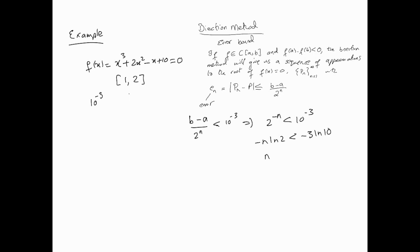And of course n then becomes greater than 3 ln 10 divided by ln 2, which is equal to approximately 9.96. This means that n = 10 iterations, 10 iterations should give us the accuracy, should achieve the desired accuracy.